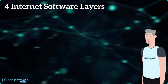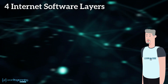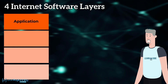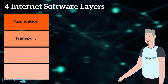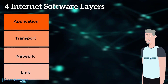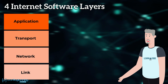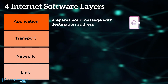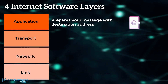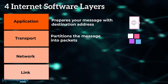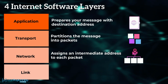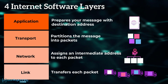In the internet, these coordinator tasks are controlled by layers of software: starting with the application layer software, followed by the transport layer software, the network layer software, and finally the link layer software. The application software prepares your message with destination address. The transport software partitions the message into packets. The network software assigns an intermediate address to each packet and the link software transfers each packet.